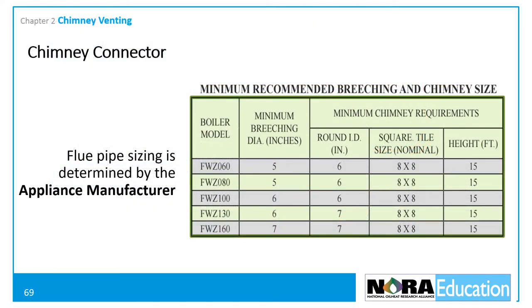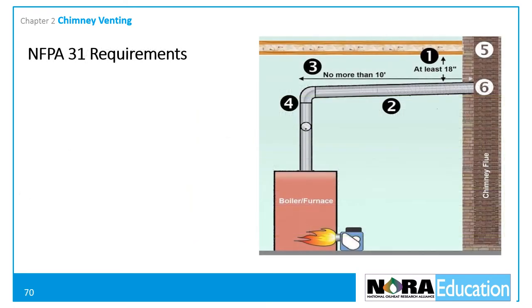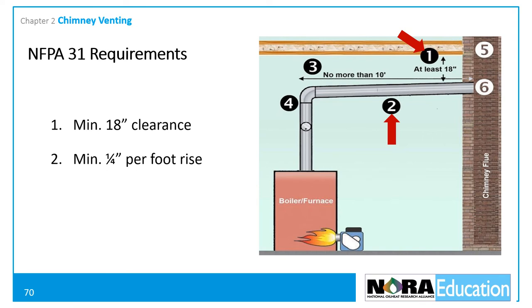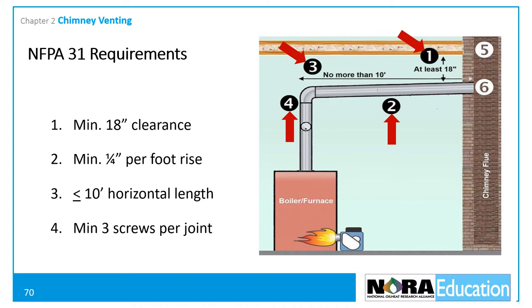Flue pipe sizing is determined by the appliance manufacturer. A manufacturer chart shows minimum flue pipe size ranging from 5 to 7 inches depending on the model. NFPA 31 has numerous regulations regarding the connection between the appliance and the chimney. Technicians should refer to the current edition of the standard and the local authority having jurisdiction. The 2020 version of NFPA 31 requires for natural draft appliances: the flue pipe must be at least 18 inches from a combustible wall or ceiling; the flue pipe must maintain a pitch or rise of at least one-quarter inch per foot of horizontal length; the horizontal length must not exceed 10 feet unless a draft fan is used; and each joint of the flue pipe shall be fastened with at least three screws.